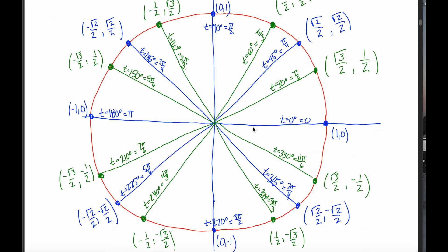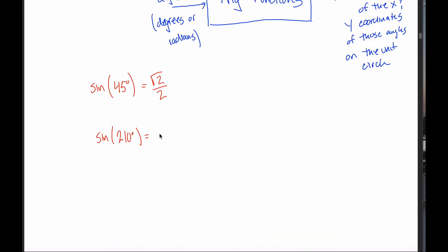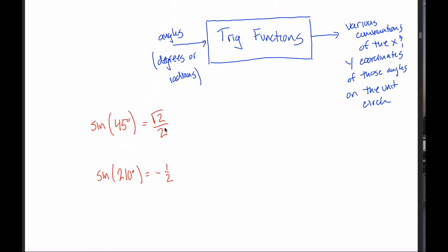What about the sine of 210 degrees? Referring back to the unit circle, 210 degrees is this point down here, and sine always refers to the y-coordinate. So the answer — sine of 210 degrees — would be negative one half. This function would kick out negative one half when someone puts 210 into it. All the sine function does is kick out the y-coordinate on the unit circle of the point with that angle.